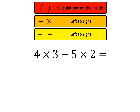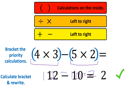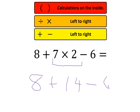This one is a bit trickier. We do the multiplication first: 4 times 3 is 12, then subtract 5 times 2 which is 10, so 12 take away 10 equals 2. This next one is also a bit trickier: we do the multiplication first, giving 8 plus 14 subtract 6. Working left to right: 8 plus 14 is 22, subtract 6 is 16.